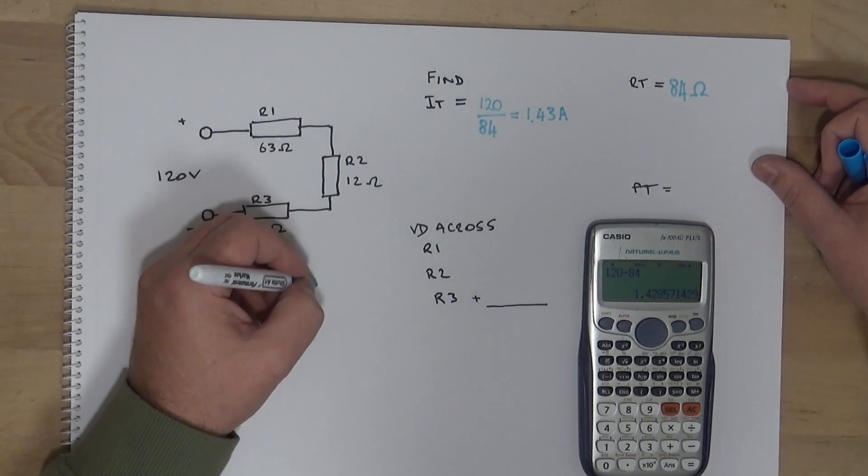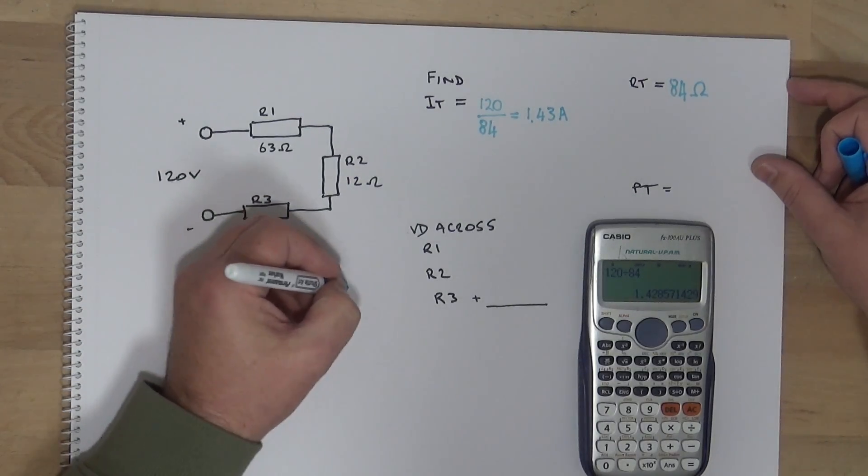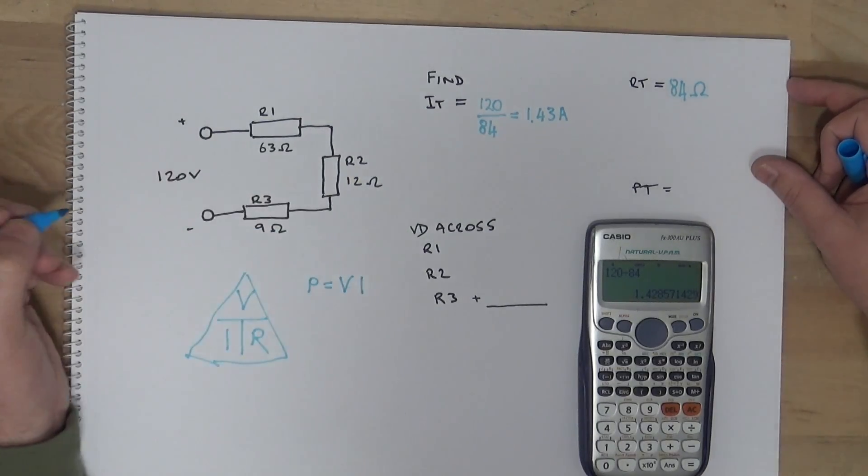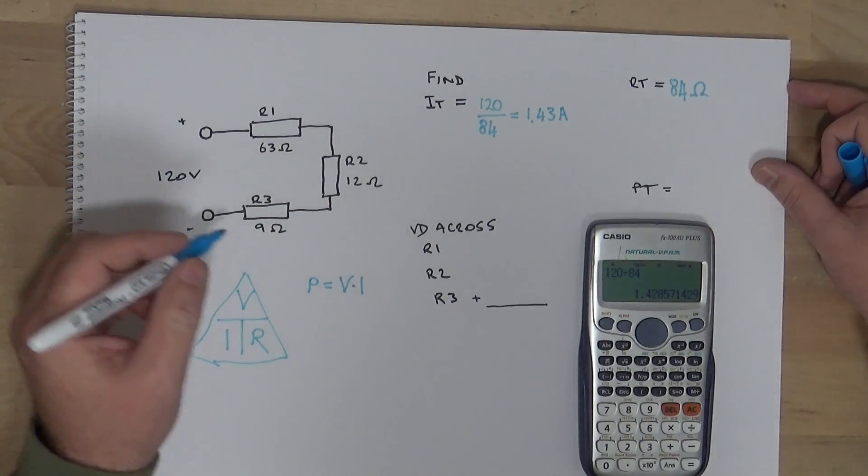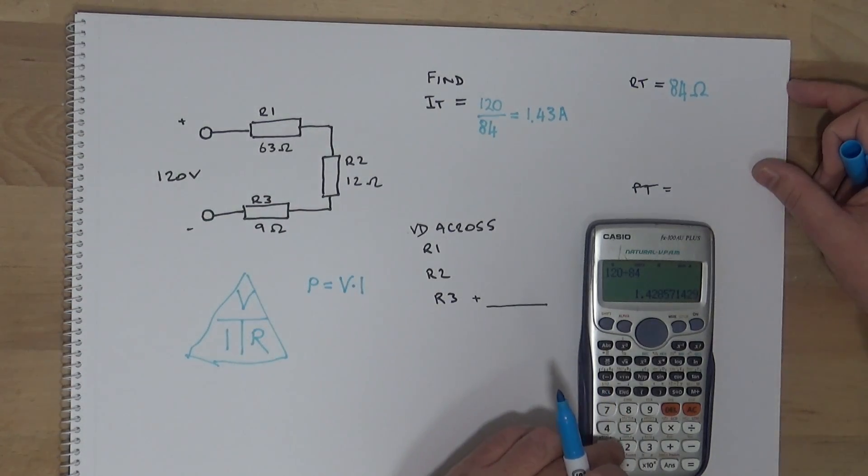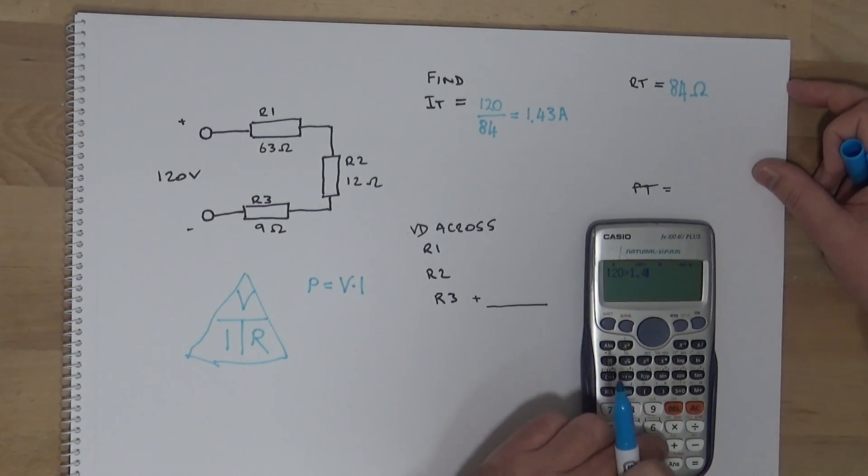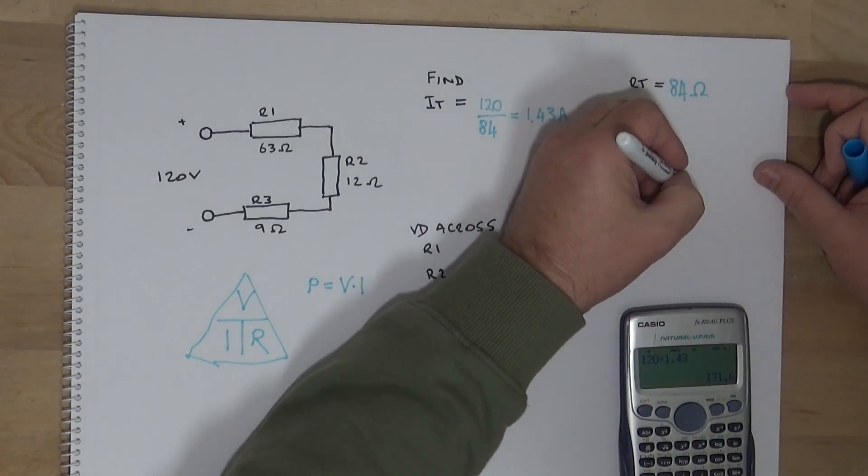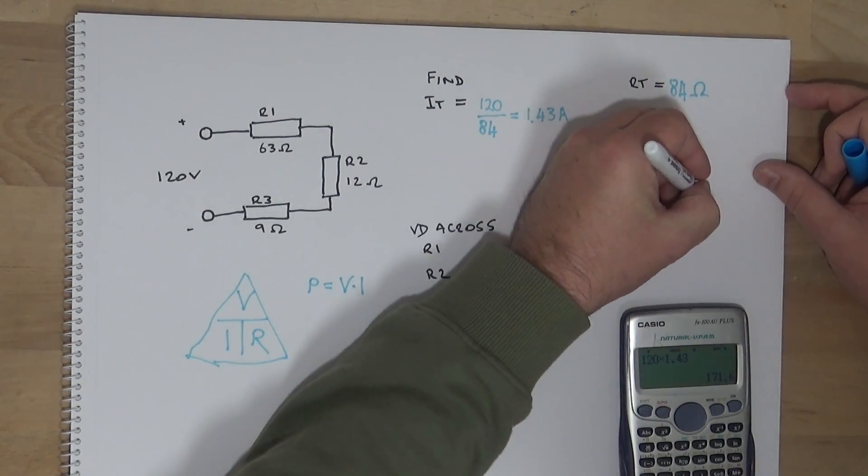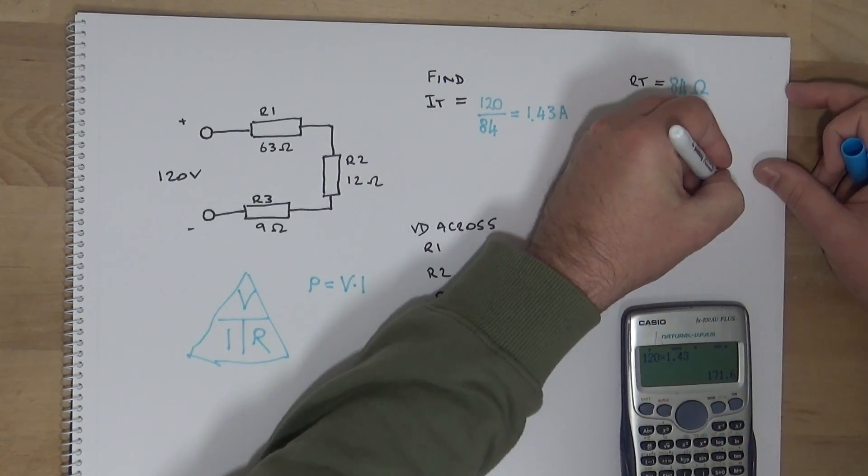Okay, so P equals VI. So we can get the power total. 120 times 1.43, 171.6 watts.